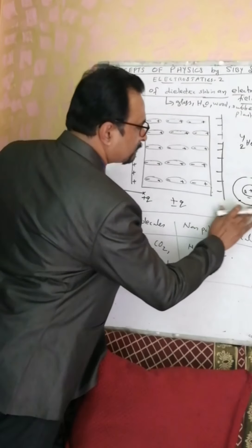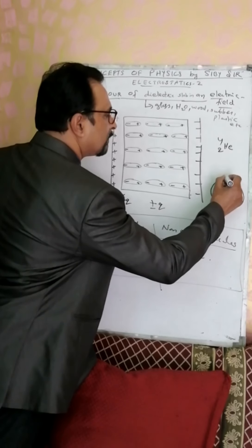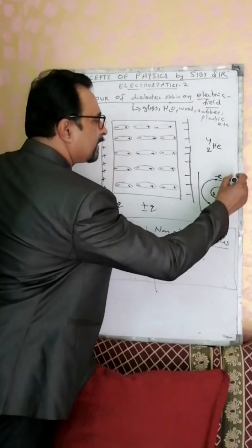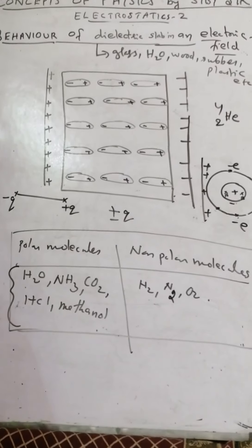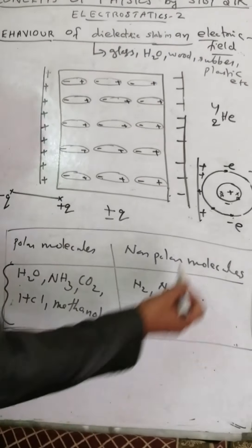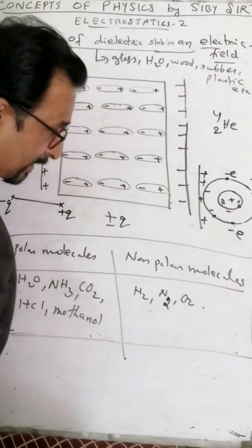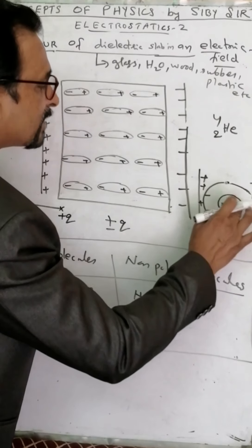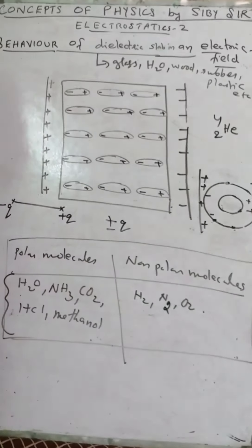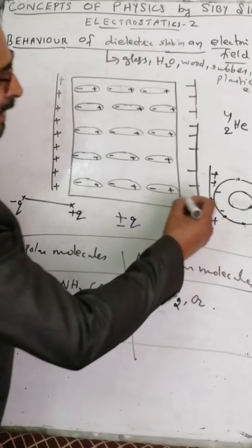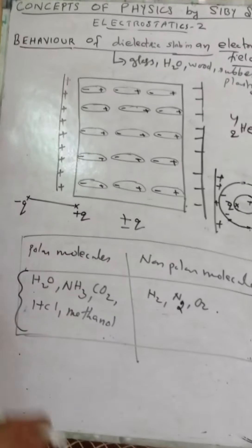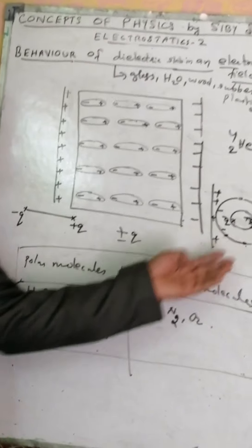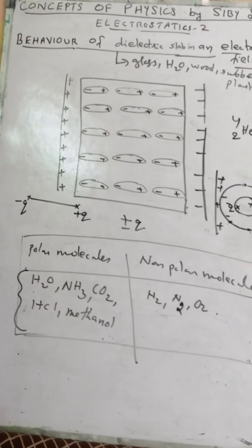Suppose there is a polar molecule and you place it in an electric field. Then what will happen? Due to induction, negative charge gets accumulated near the positive side and positive charge gets accumulated on the opposite side. The center of mass of the negative charge shifts towards one side and the center of mass of the positive charge shifts towards the other side. So a molecular atom which was non-polar earlier is converted to a polar molecule.